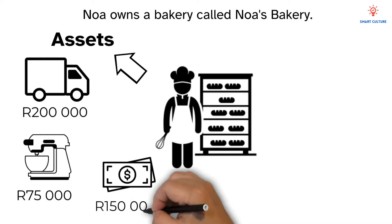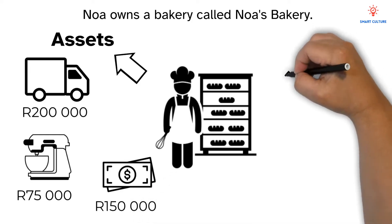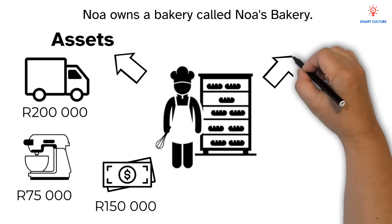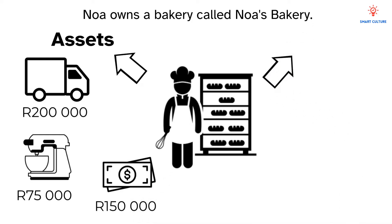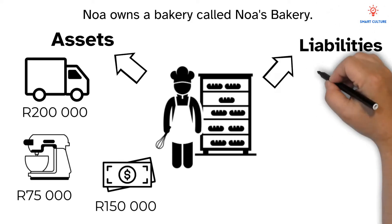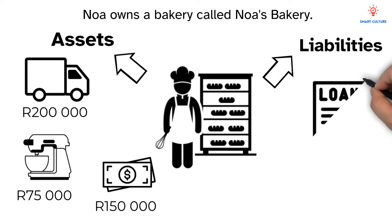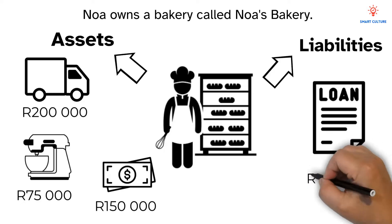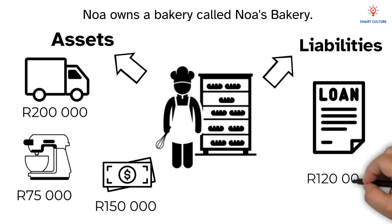But Noah also owes some money to the bank. This is called a liability. Noah took out a loan of 120,000 rand to buy the delivery van.